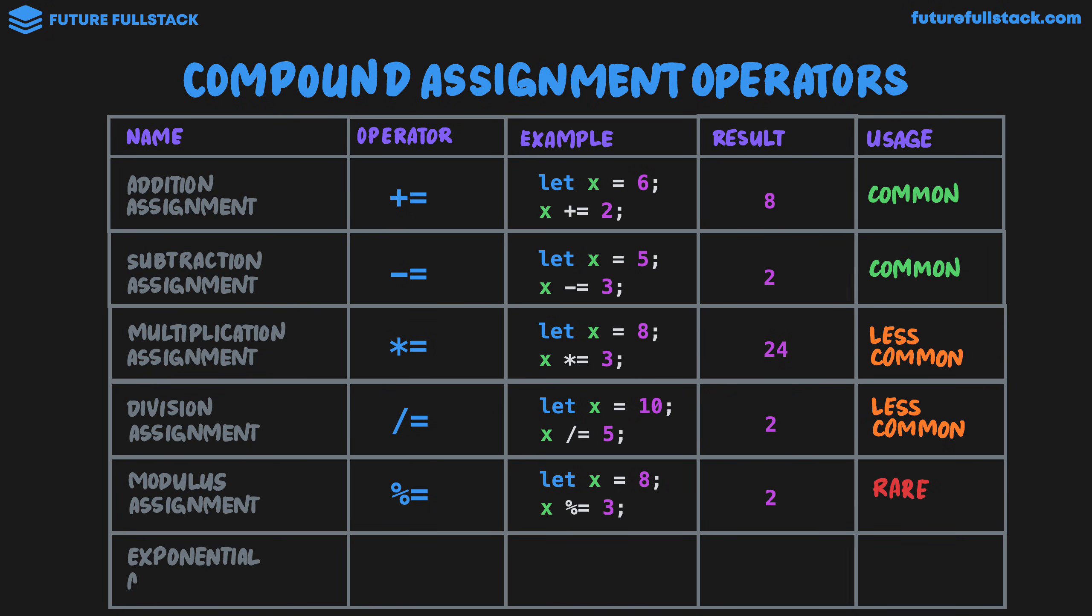The final one is the exponential assignment, where we have asterisk asterisk equals. Looking at the example, we have let x equals 2. We then perform exponential assignment with the value 3 to change the value of x to 8. That is 2 to the power of 3, which is 2 times 2 times 2, which is 8. And similarly, this is rarely used.